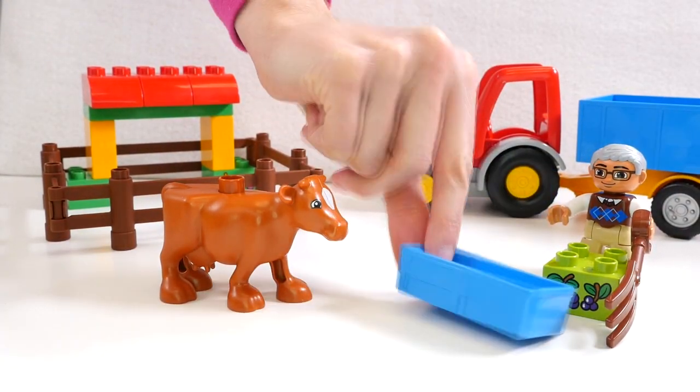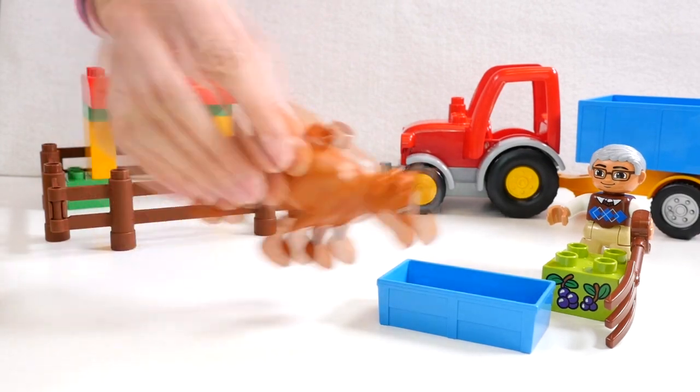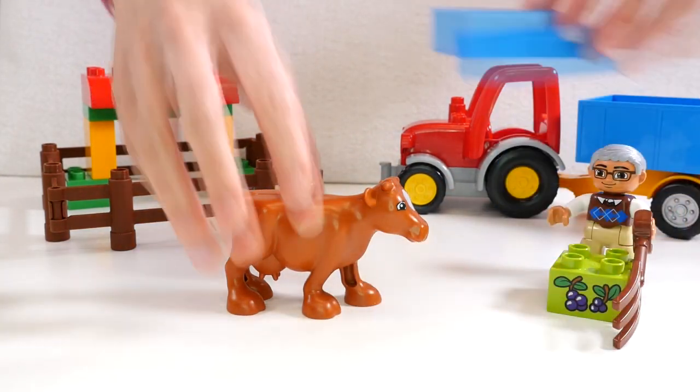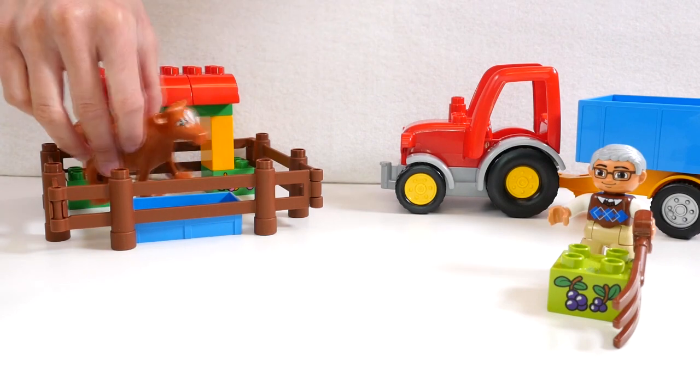And this is the trough for the cow. That's what he eats out of. But we can put that in the barn so that way the cow doesn't get out.